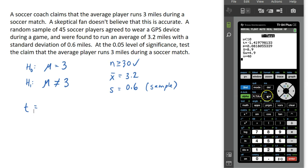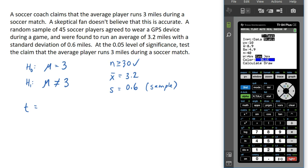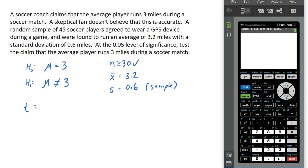Go back to STAT, go over to Tests, go down to the T-Test again, and enter the stats. The mean from the null hypothesis is 3. The sample mean is 3.2. The sample standard deviation is 0.6. The sample size is 45. This time, select the left option — the two-tailed test — the not-equal-to option — and press Enter. Then calculate.